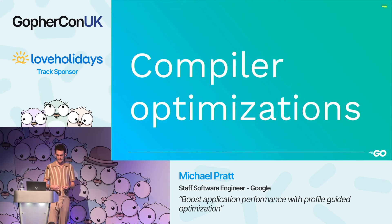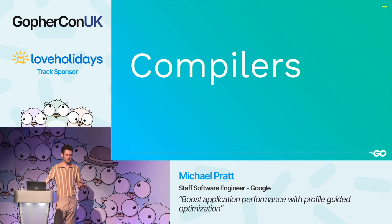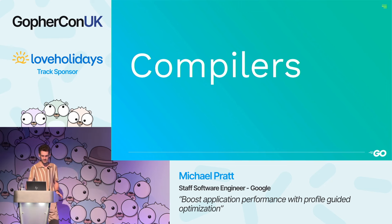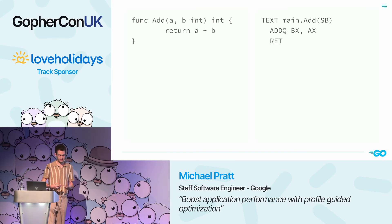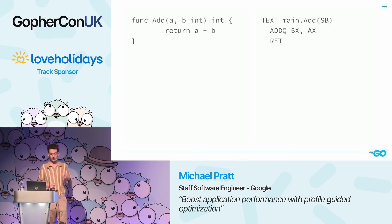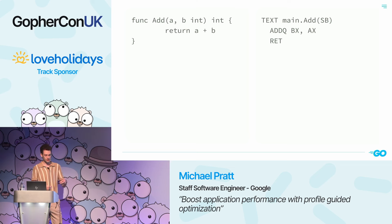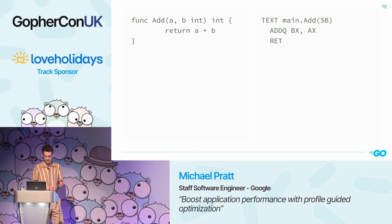Before we talk about profile guided optimization, let's talk about what we mean by compiler optimizations in general. In the most general sense, a compiler is a program that translates source code from one language into another target language. With Go, we're talking about the Go compiler used with go build, which translates Go source code into machine code for your target CPU — such as amd64 or arm64.